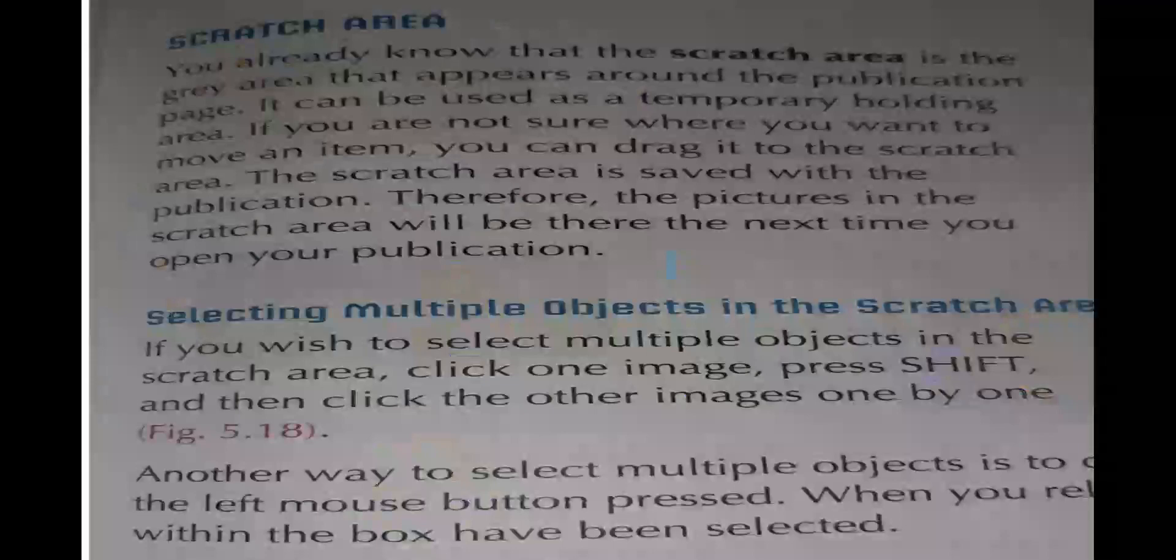Basically, you already know about the scratch area. The scratch area is the gray area that appears around the publication page. It can be used as a temporary holding area if you are not sure where you want to move an item. You can drag it to the scratch area.